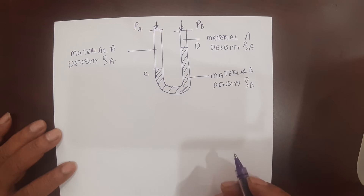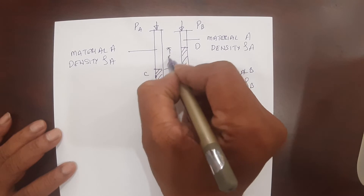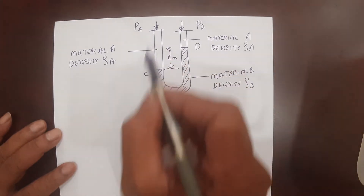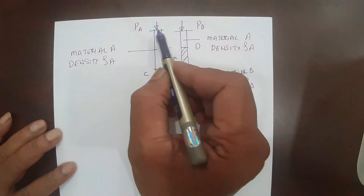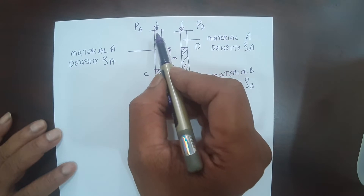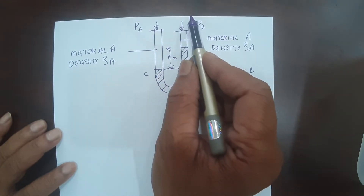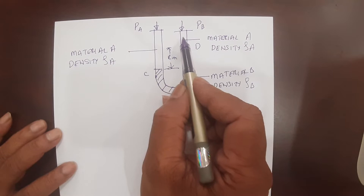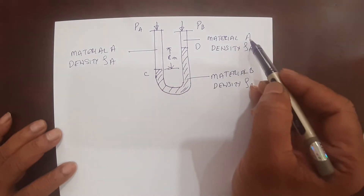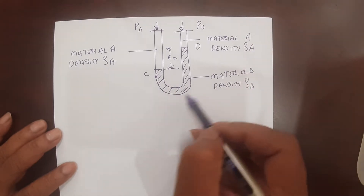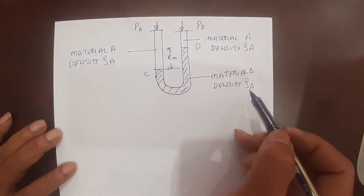We will now see how to determine pressure drop using a U-tube manometer. Here you have a U-tube manometer connected to a pipeline in which fluid is flowing. This is upstream and this is downstream, connected by means of a pressure tapping. The fluid passing through the pipeline is material A with density rho A. The manometric fluid is material B with density rho B.